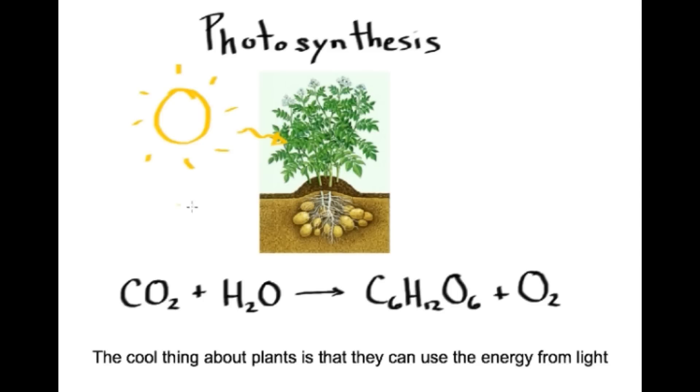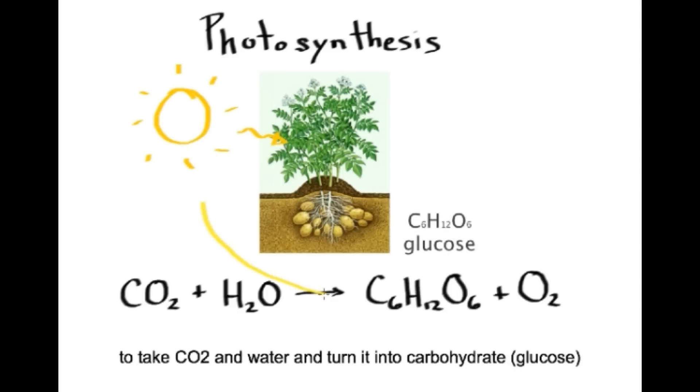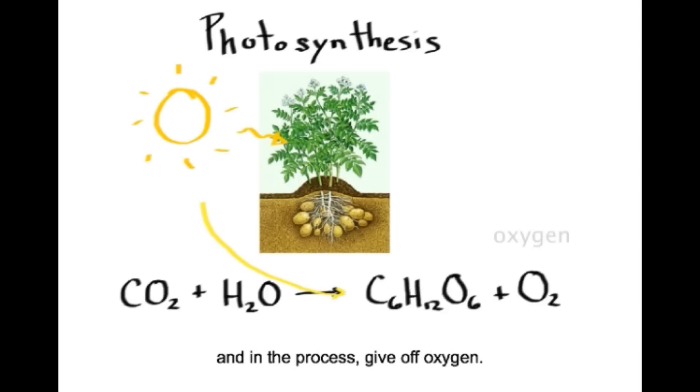The cool thing about plants is that they can use the energy from light to take CO2 and water and turn it into carbohydrate, glucose. And in the process, they give off oxygen.